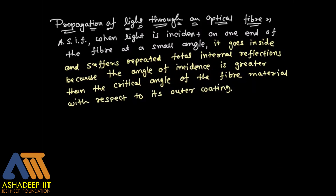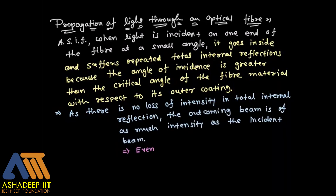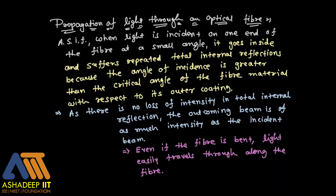Repeated total internal reflections occur because the angle of incidence is greater than the critical angle of the fiber material with respect to its outer coating (cladding). Remember the word cladding — it is the outer layer with a refractive index less than the core. As I mentioned, in total internal reflection there is no intensity loss, so the outgoing beam has the same intensity as the incident beam.